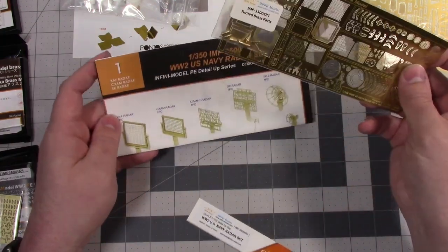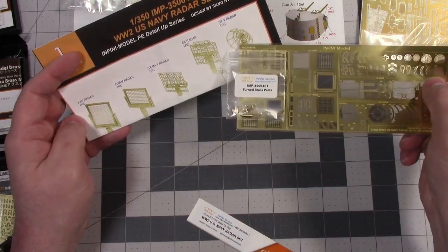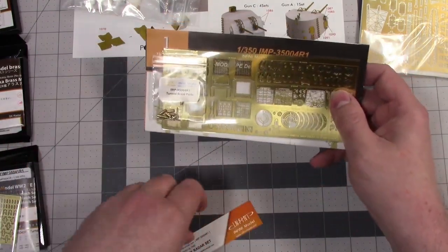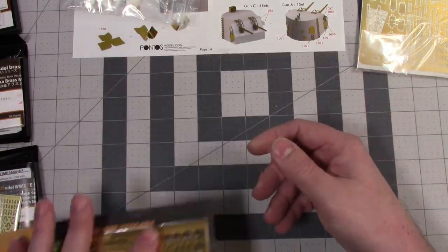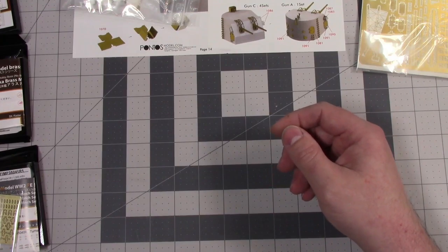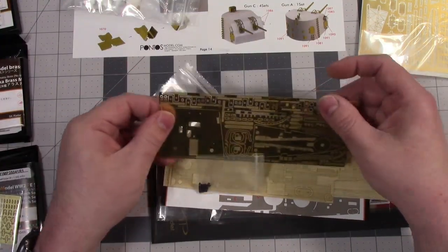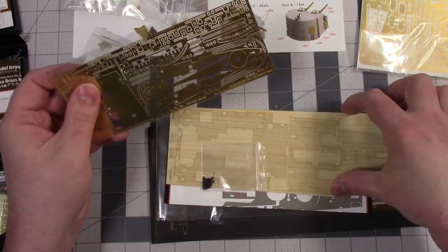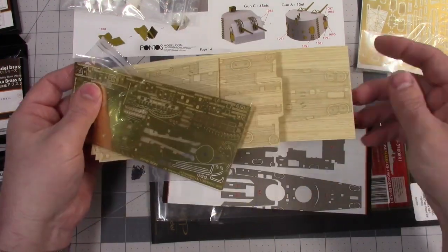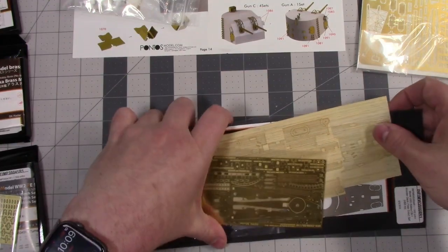This is a World War II radar set. It has all these different radars. So I can put on which one that I need for the Alaska. And then of course we have the wooden deck detail with different pieces and things like that. Here's the wooden deck and the instructions. Not too much going on there.